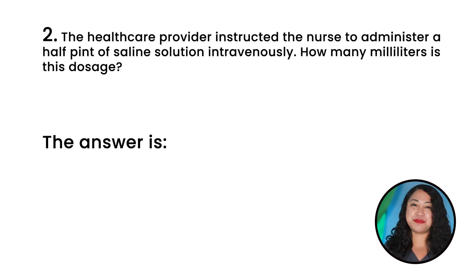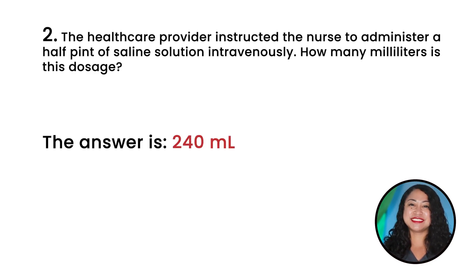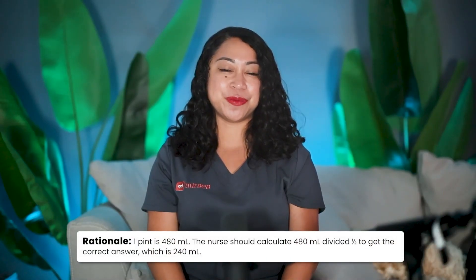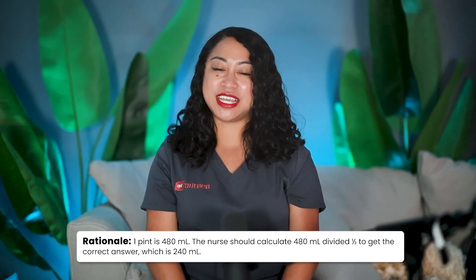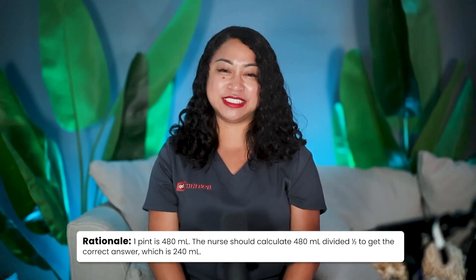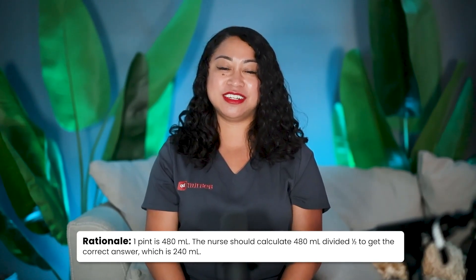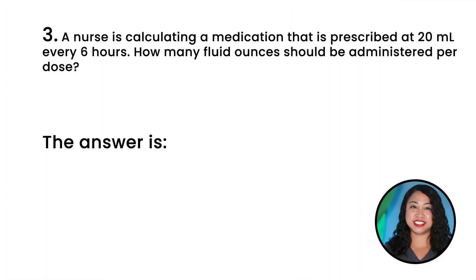Question 2: The healthcare provider instructed the nurse to administer a half pint of saline solution intravenously. How many milliliters is this dosage? The correct answer is 240 milliliters. Rationale: 1 pint is 480 milliliters. Divide 480 milliliters by 2 to get 240 milliliters.